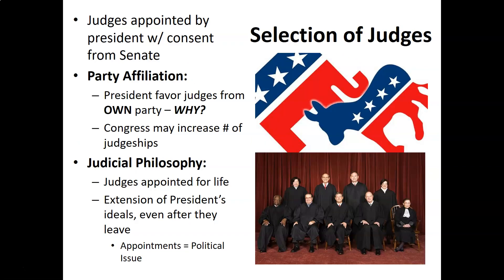Now for the selection of judges — remember judges are appointed by the president with consent from the Senate. Generally judges are appointed by party affiliation: not necessarily that they're Democrat or Republican themselves, but how they lean based on their past rulings. A president is generally going to favor a judge from their own party because they'll have similar leanings and possibly rule on cases the way the president would want. Congress can also increase the number of judgeships, which is worth watching given the recent appointment of Justice Barrett and Biden becoming president.